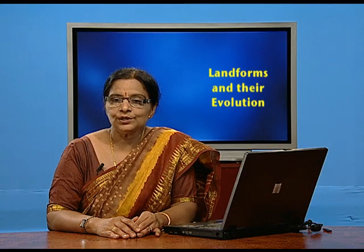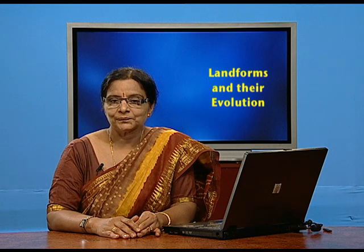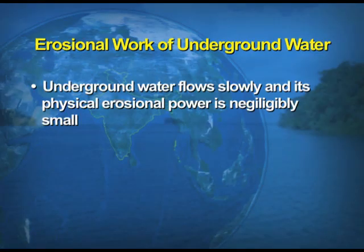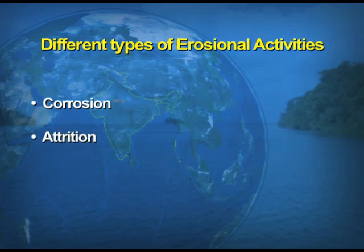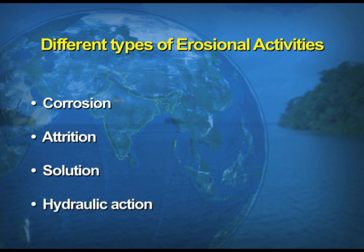Now the erosional work of underground water. Underground water flows slowly and its physical erosional power is negligibly small. Erosion by underground water includes different types of activities, for example: corrosion, attrition, solution, and hydraulic action. These are the different types of erosional activities done by underground water.